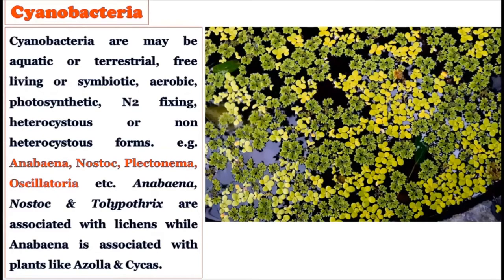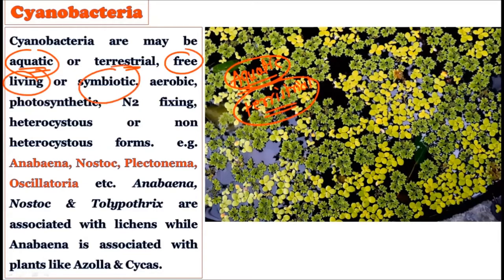Habitat-wise, cyanobacteria may be aquatic or terrestrial. The main habitat is aquatic, though some terrestrial forms also exist. They may be free-living or symbiotic — they can live freely in water, but they can also form symbiotic associations with other organisms. This symbiotic association is responsible for creating many relationships with plants.